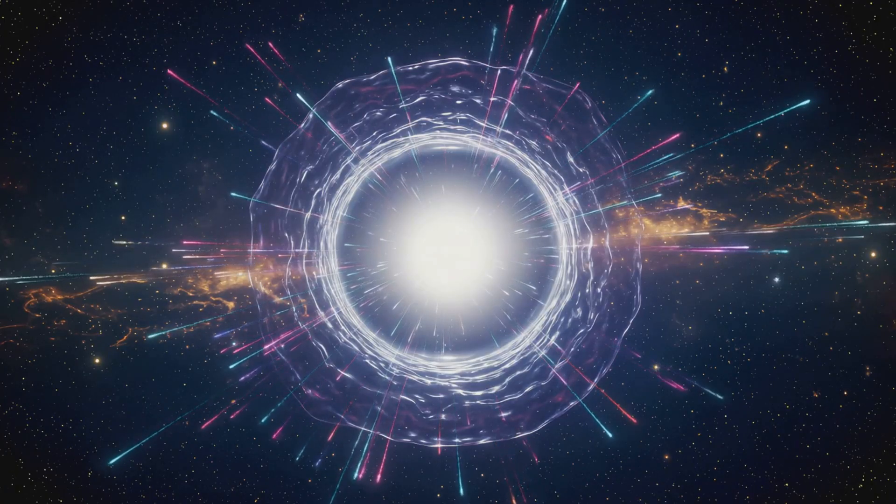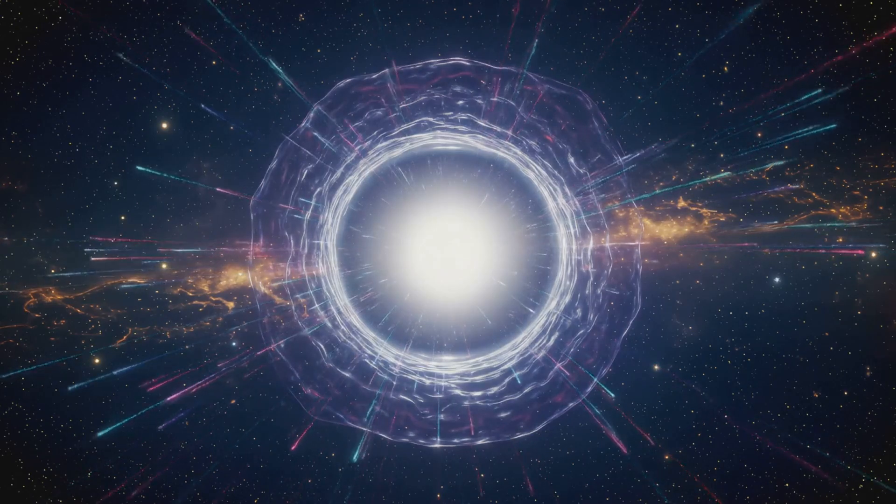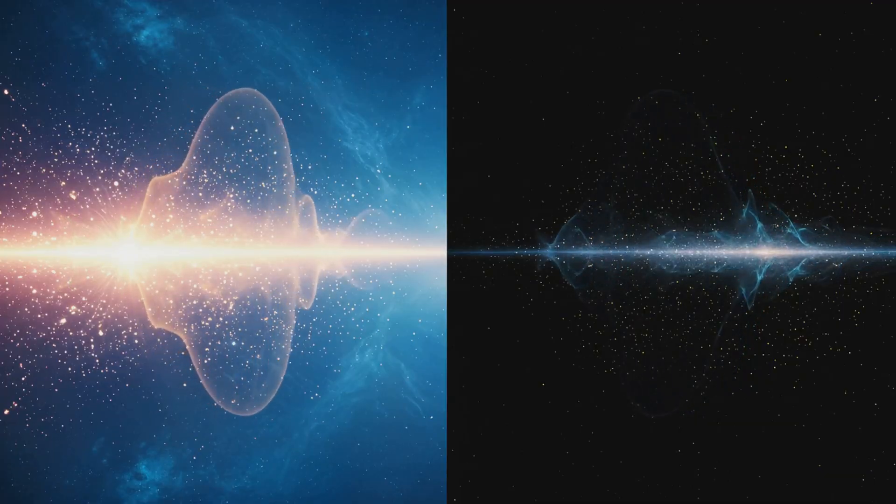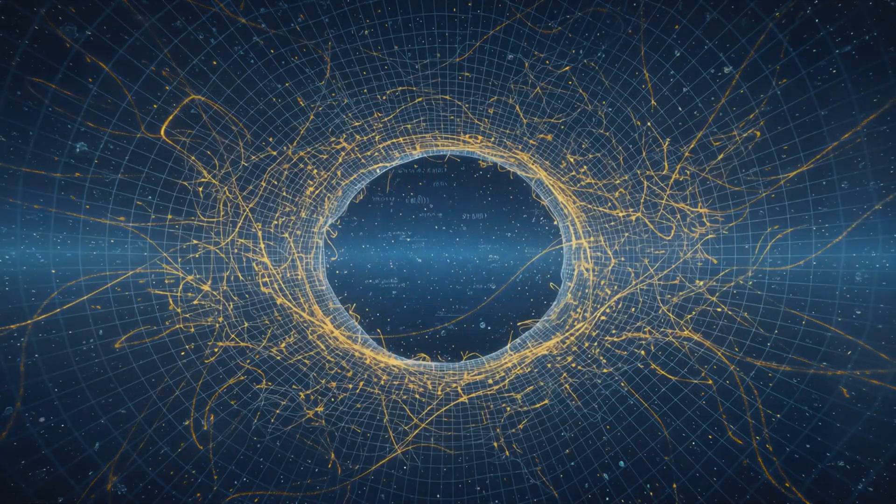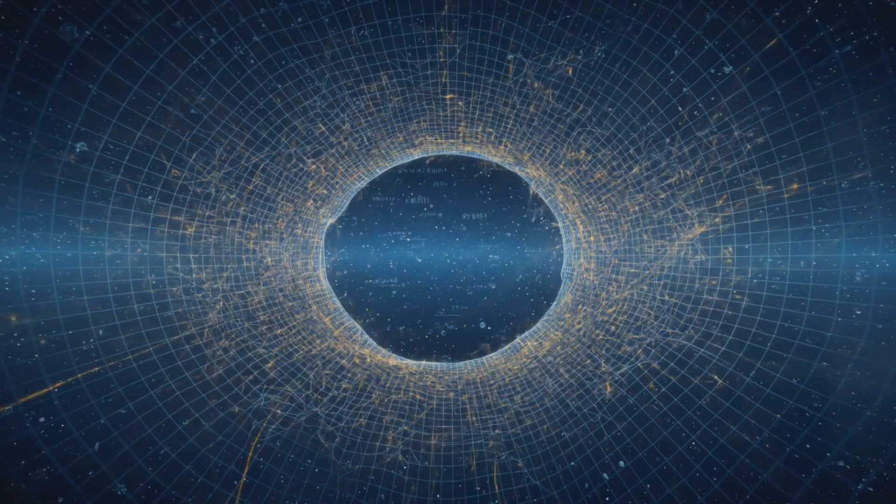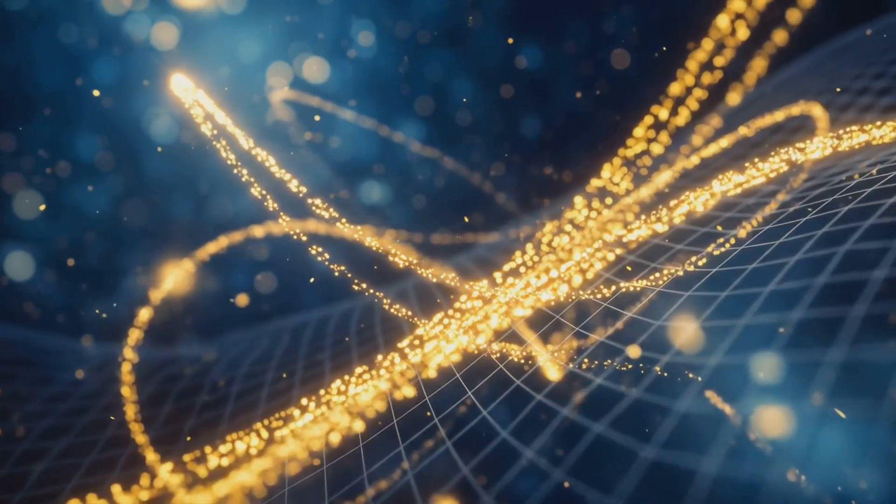When two waves interfere constructively, we get energy, particles, and form. When they cancel, we get emptiness. Einstein showed that mass curves spacetime. Feynman showed that particles follow every possible path. QIA shows these ideas are one.